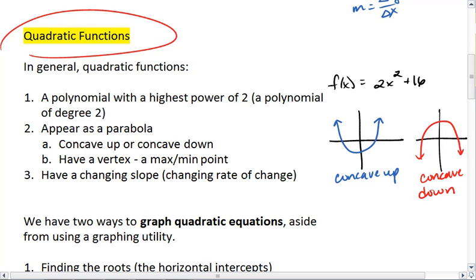Each parabola, no matter whether it's concave up or concave down, will have a vertex. Which is either the lowest point, which is called a minimum, or the highest point, which is called a maximum.